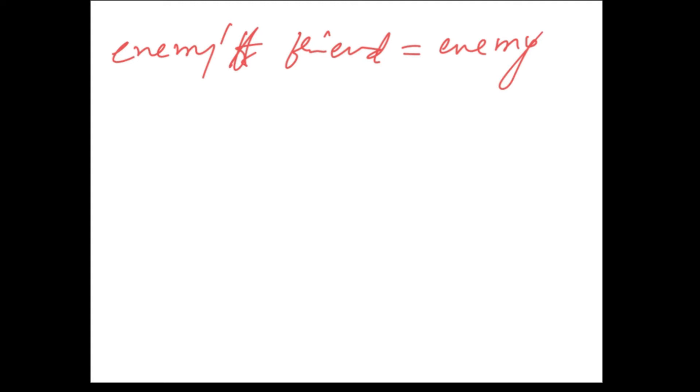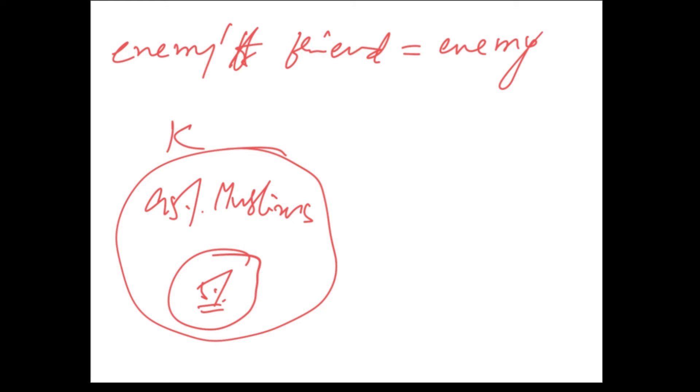Now, let us apply this to the situation of Kashmiri pundits. It is Kashmir and 5% are Hindus. We say there is a government here. This government is seen being controlled by India, which is seen as Hindu.